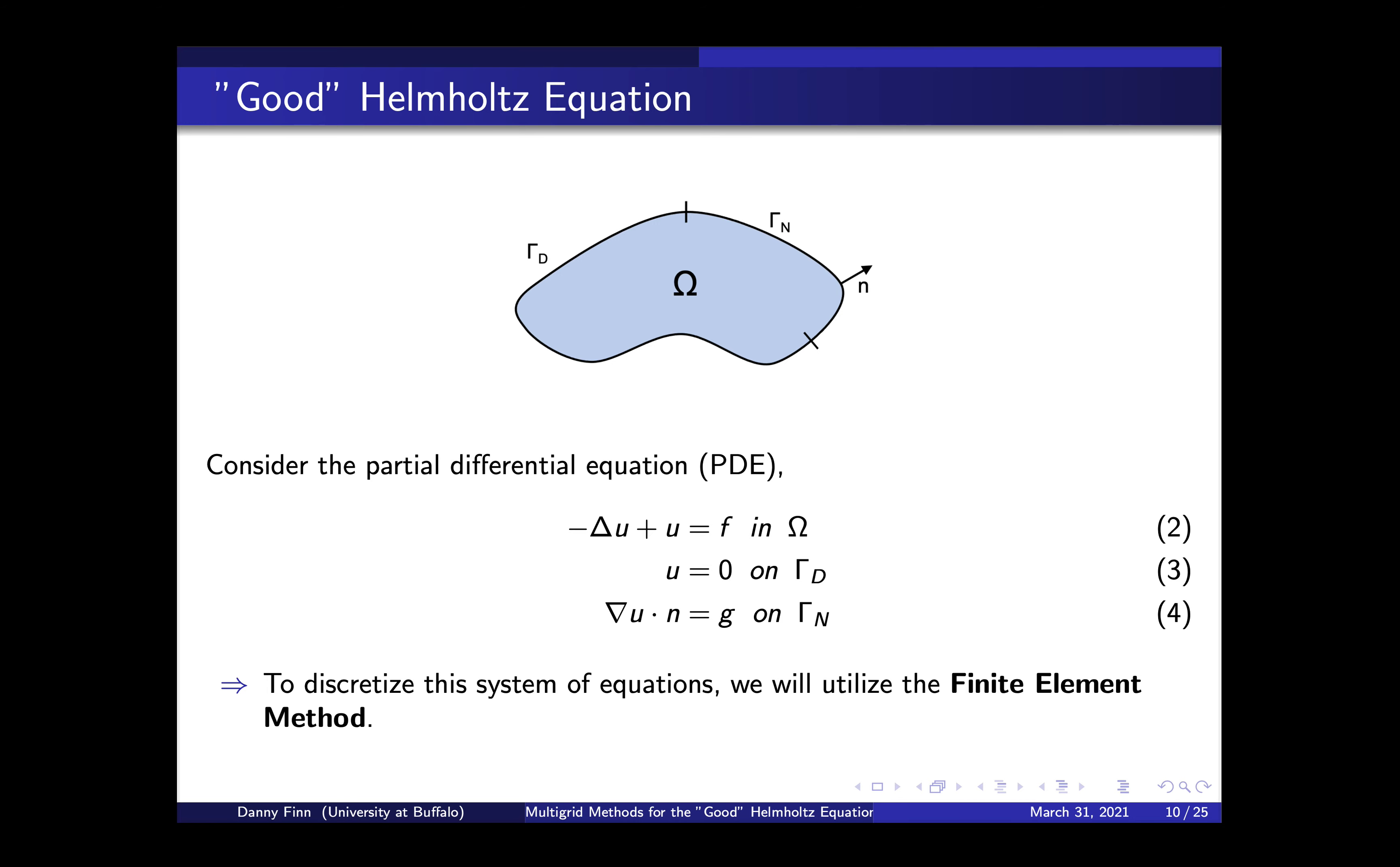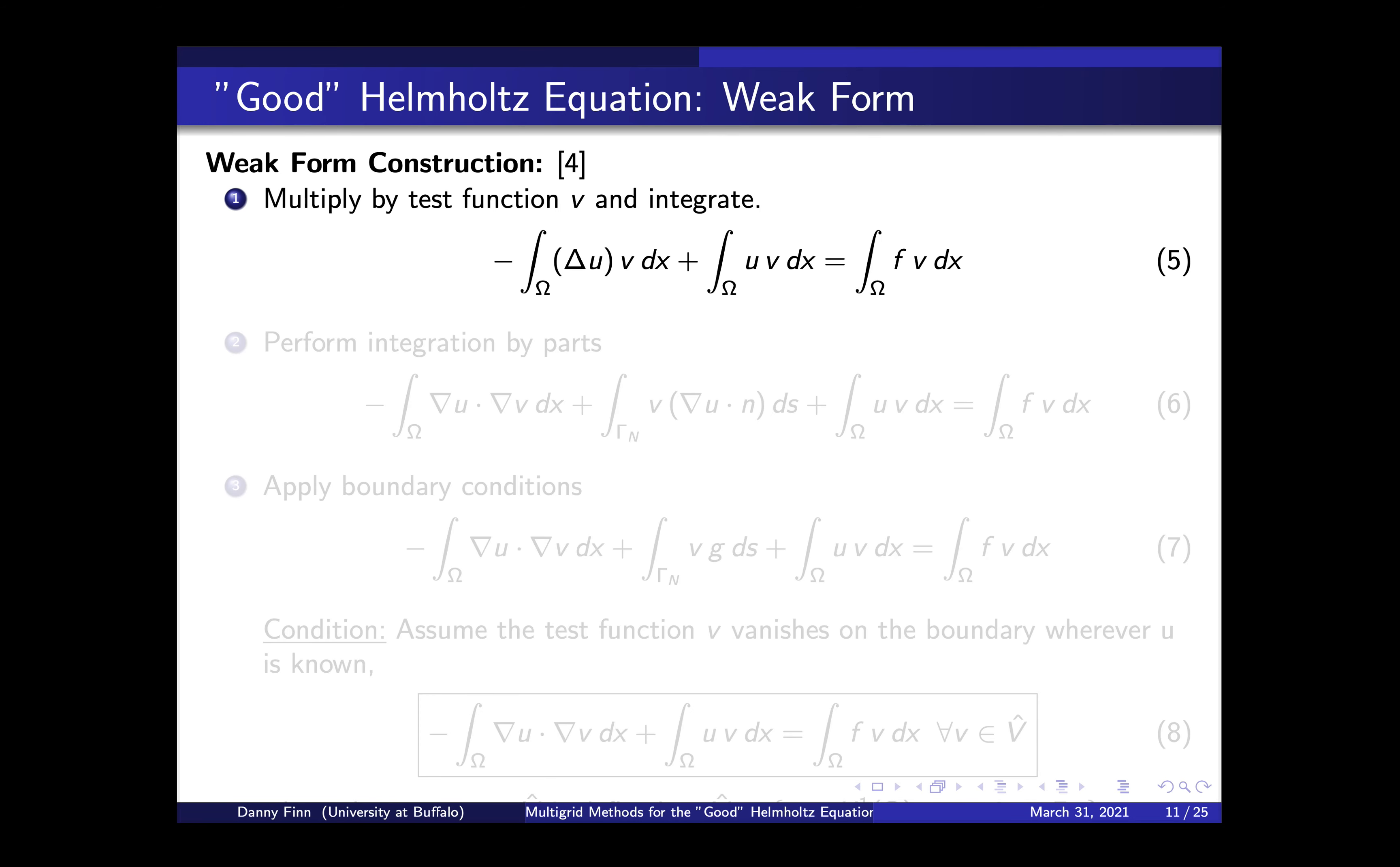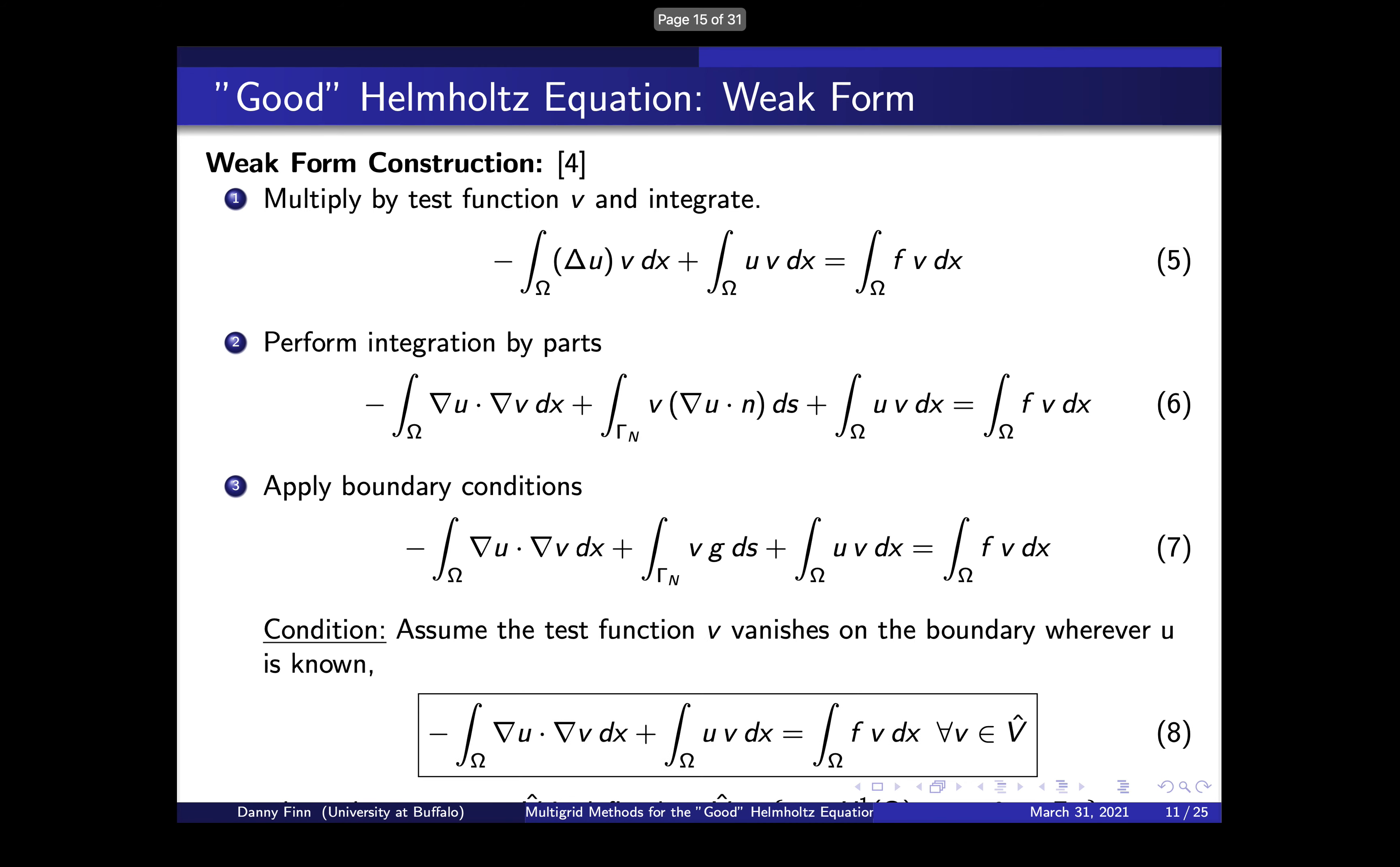And then we have these two boundary conditions. So u on the surface gamma d is going to be zero. And then the dot product between the gradient u and the normal vector coming off of this gamma n surface is going to be some arbitrary G we'll talk about a little bit later. So we need some discretization of this system of equations. And for that, we turn to finite element methods. So for finite element methods and for what PETSc uses, PETSc being the program that I'm using for this, or the library that I'm using for this solve, we need a weak form or a variational form. So to get that, we multiply by some test function V and then we integrate over the domain. We take that first term and we perform integration by parts on it. And then we get this surface term, the surface integral, which we can apply some boundary condition to, to get V times G and an integral over the surface.